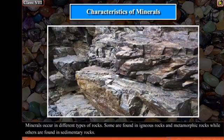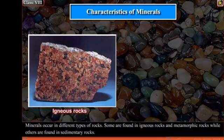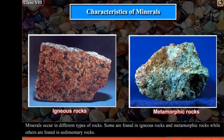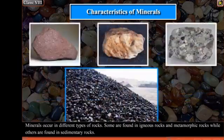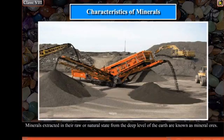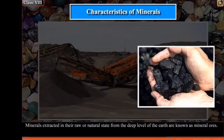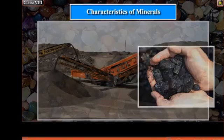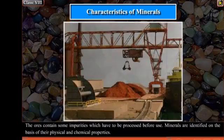Minerals occur in different types of rocks. Some are found in igneous rocks and metamorphic rocks, while others are found in sedimentary rocks. Minerals extracted in their raw or natural states from the deep level of the earth are known as mineral ores. The ores contain some impurities which have to be processed before use.